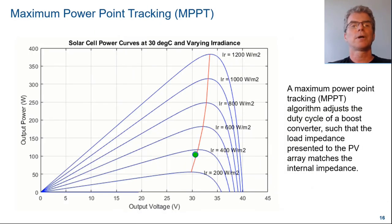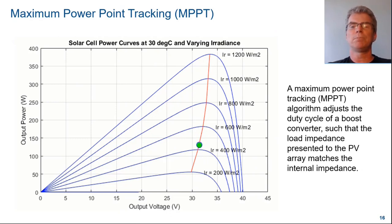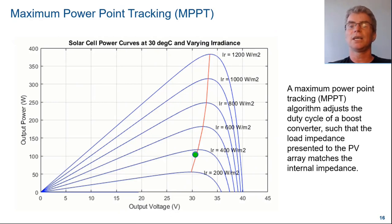With a solar power plant, for a given irradiance, there is a maximum power transfer that can be achieved. Maximum power transfer will occur when the internal impedance of the PV array matches the load impedance. A maximum power point tracking algorithm, or MPPT algorithm, adjusts the duty cycle of a boost converter such that the load impedance presented to the PV array matches the internal impedance.